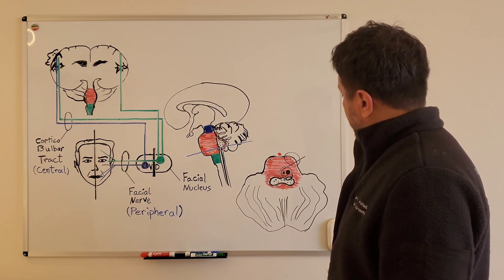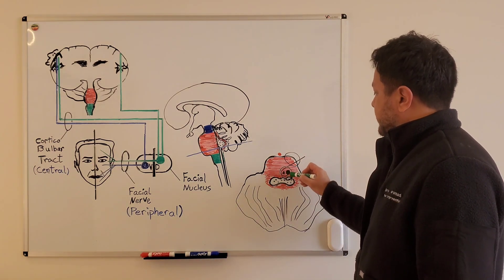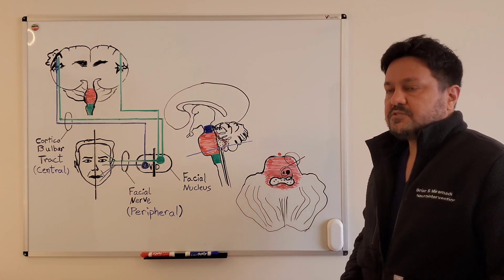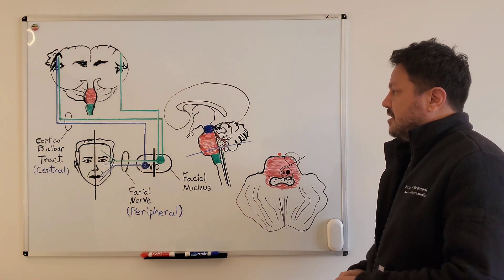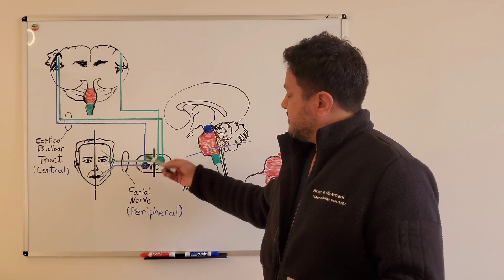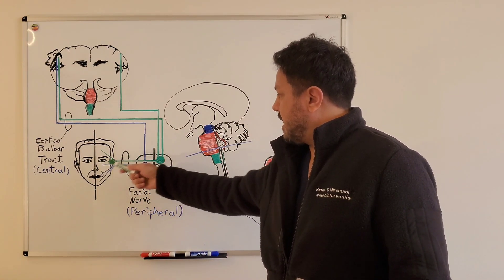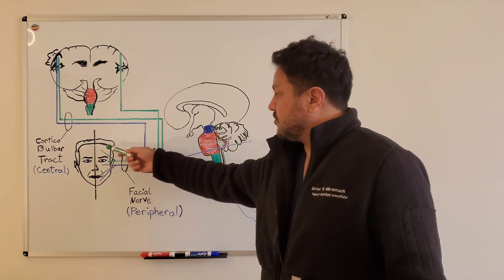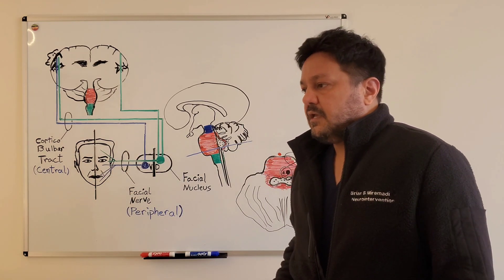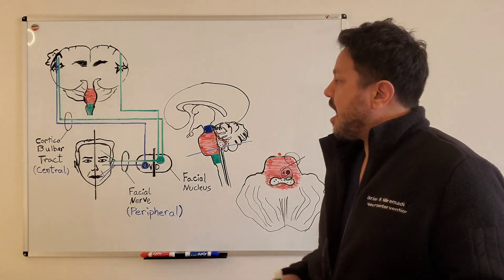But what if the facial nucleus itself is influenced by a central process? So if the whole nucleus is gone, you can assume that the end outcome will be very similar to a facial nerve palsy, so both upper and lower face weakness. It's important to mention that this is not a very common scenario.